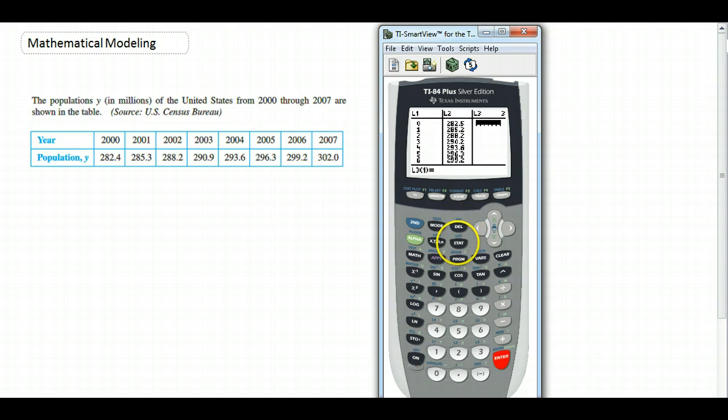So to get the linear regression equation, I'm going to go to STAT, then go over to CALC, and hit number four. It's going to ask me if I want my X list to be L1, and yes, that's our time. Our Y list will be L2, that's our population. Don't worry about frequency list. And where do you want to put the regression equation? Well, let's put it in Y1.